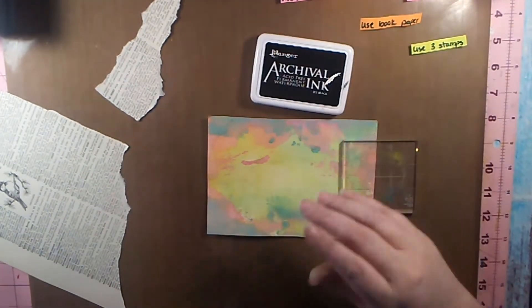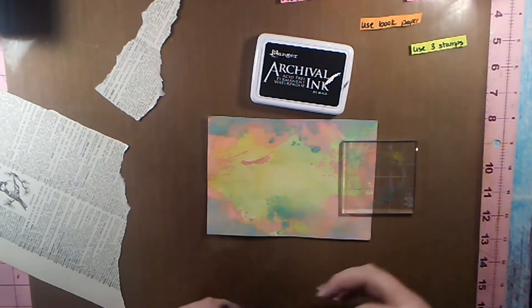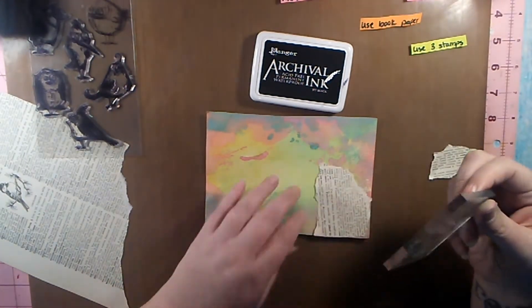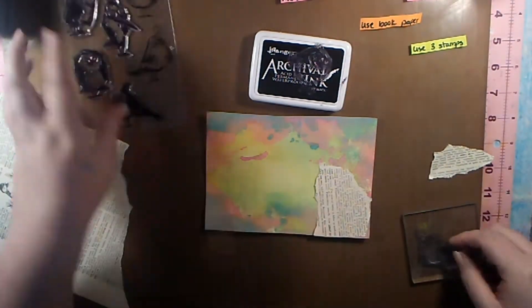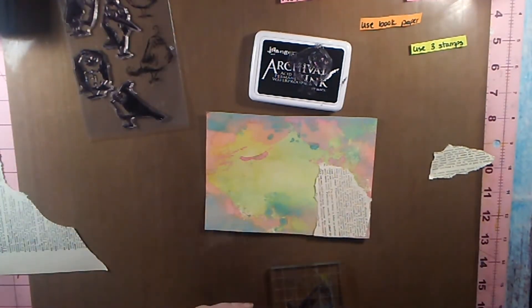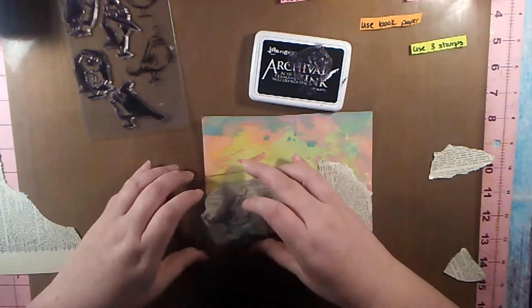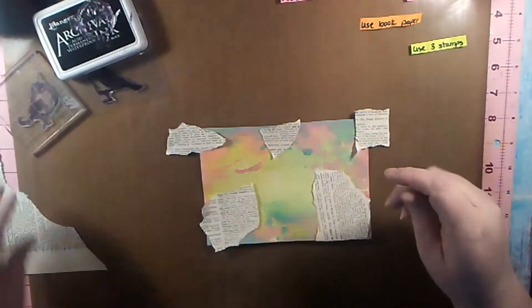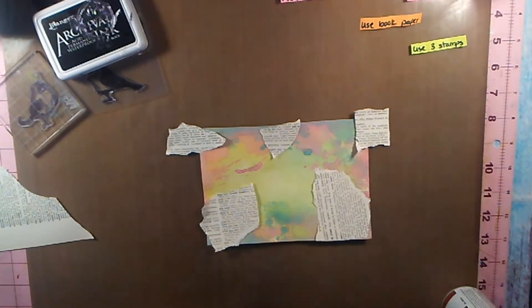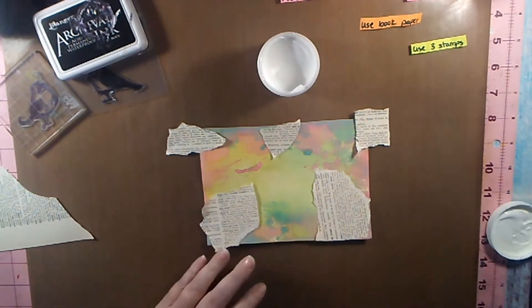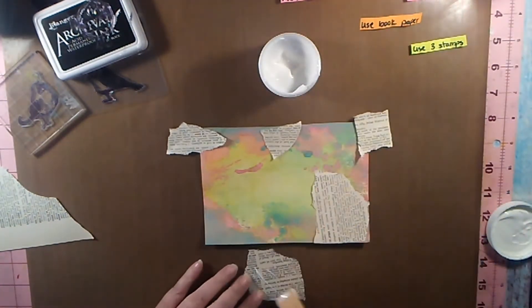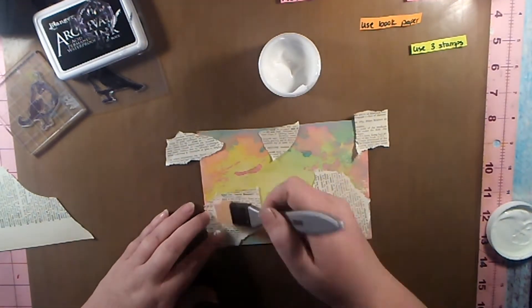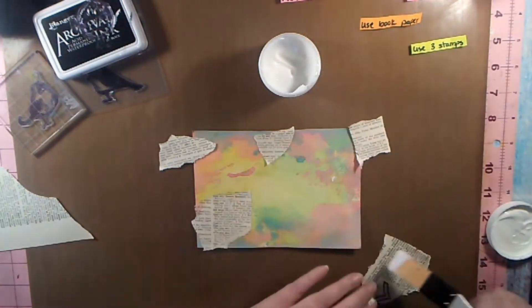The three stamps I'm gonna be using—first I'm using the Tim Holtz Crazy Bird stamps. I've decided I'm gonna stamp those onto the book paper because I really wanted them to stand out from the background. But first I'm going to stick down the book paper onto the piece using my matte medium.